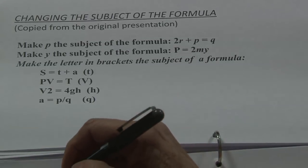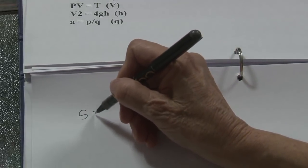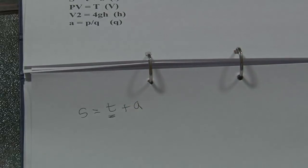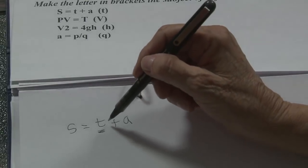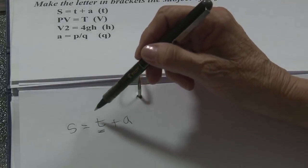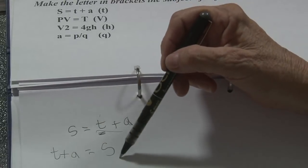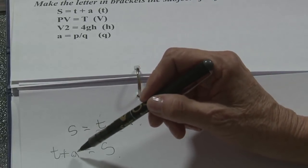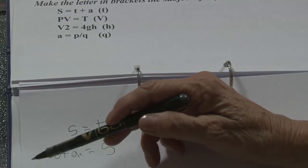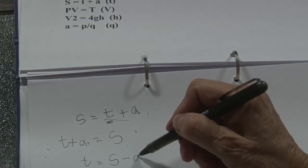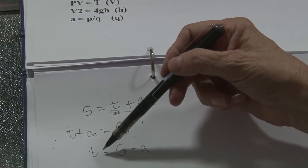S is equal to T plus A, and T should be my subject. The subject of the formula is to get T on its own. To make it easier, I'm just going to rewrite it: T plus A equals S — so T is on the left-hand side. To remove the A, I subtract A from both sides. So T equals S minus A. Now T is the subject of the formula.